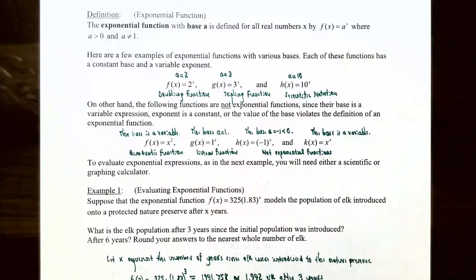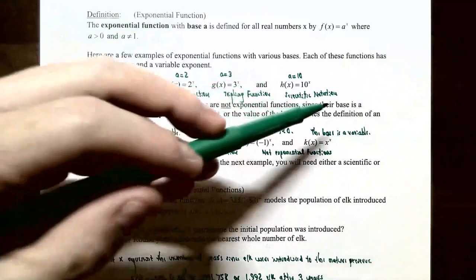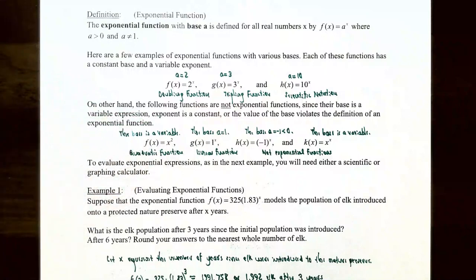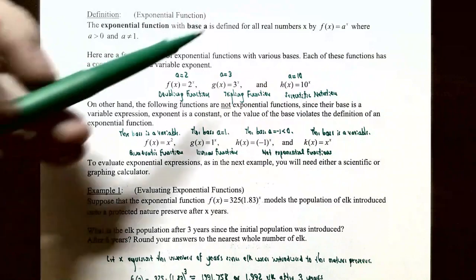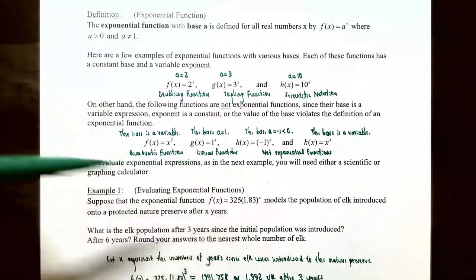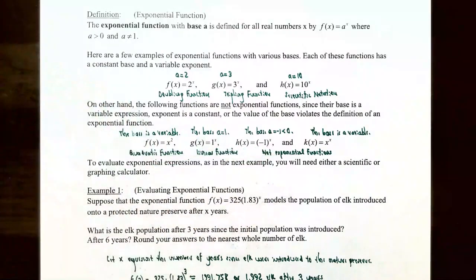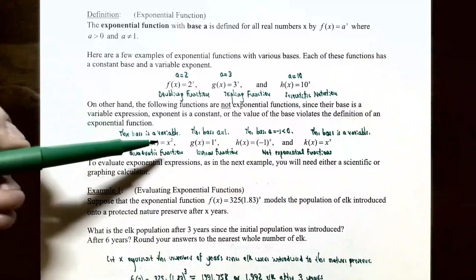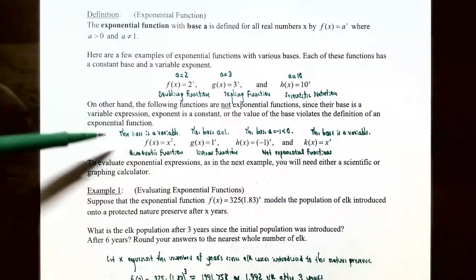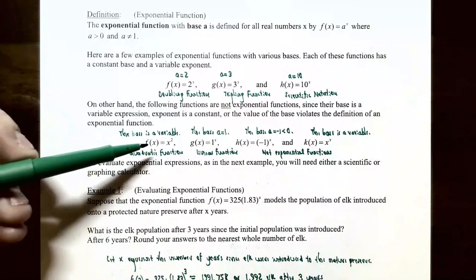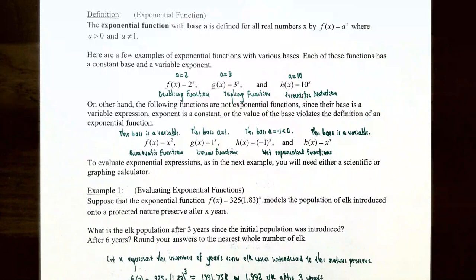On the other hand, some functions are not exponential functions — either because the base is a variable and the exponent is a constant, or because the base violates the definition. For example, f of x equals x squared is not exponential because the base is x, a variable. That makes it a quadratic function, not an exponential function.